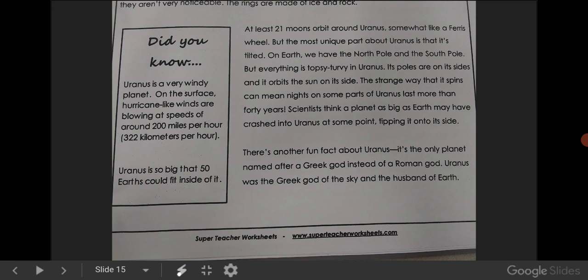Did you know? Uranus is a very windy planet. On the surface, hurricane-like winds are blowing at speeds of around 200 miles per hour.